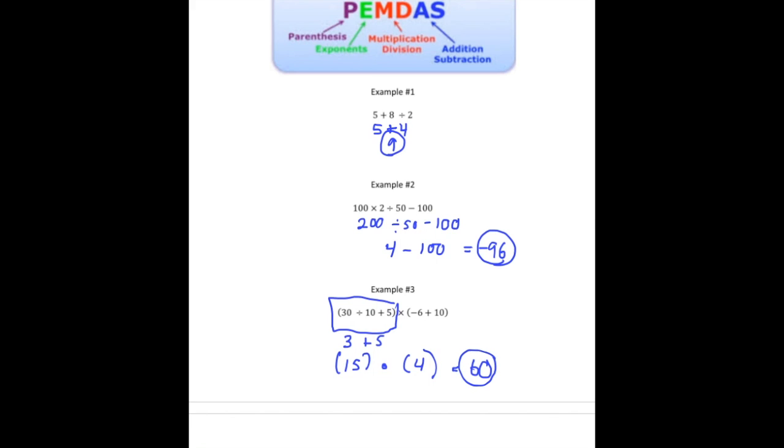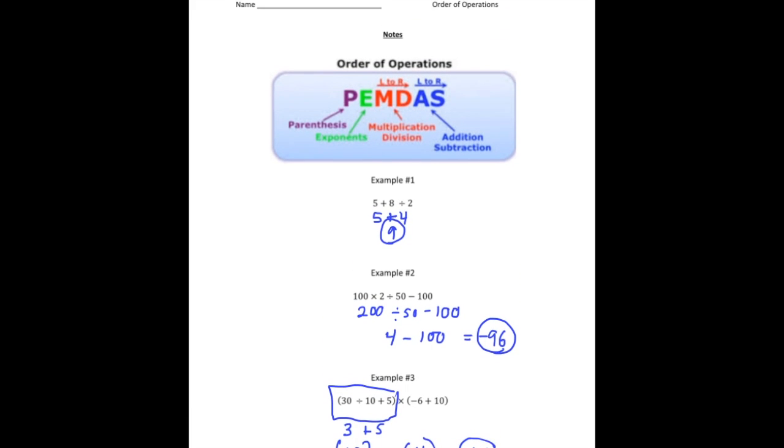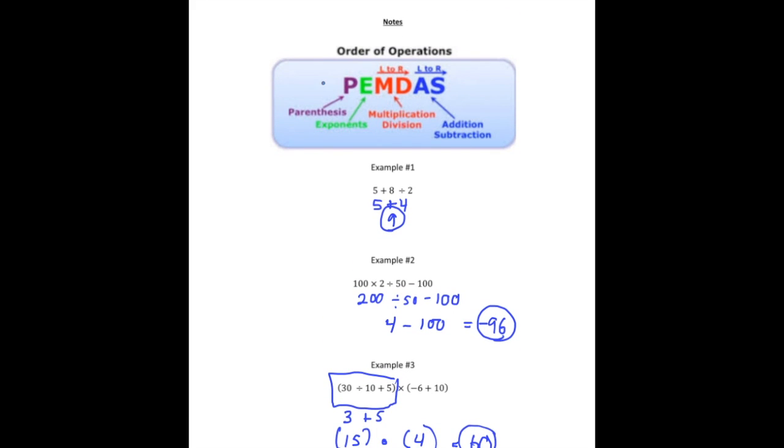So the key things to remember about the order of operations. Parentheses first. Then exponents. And then multiplication and division. But again, the order matters depending on which one appears first. And then the same thing for addition and subtraction. You always work left to right. Sometimes you might subtract before you add, depending on the order of the numbers.